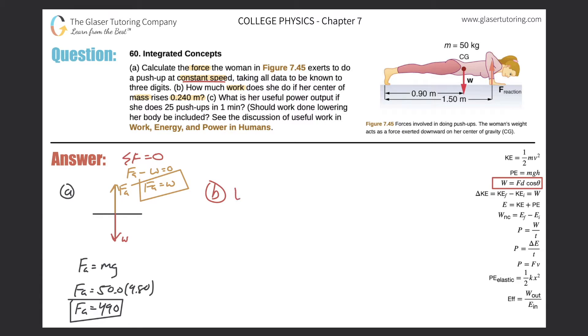So for letter B, I'm thinking about the work that's being performed will be equal to the force applied multiplied by the distance the object is moving times the cosine of the angle between these two vectors.